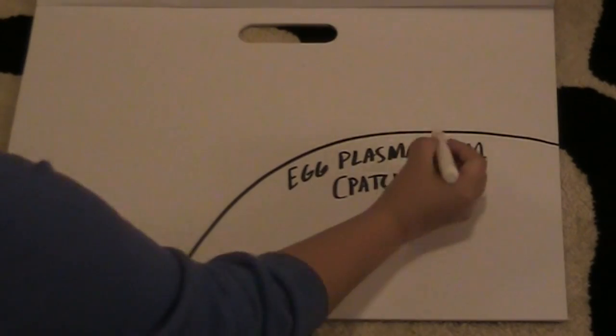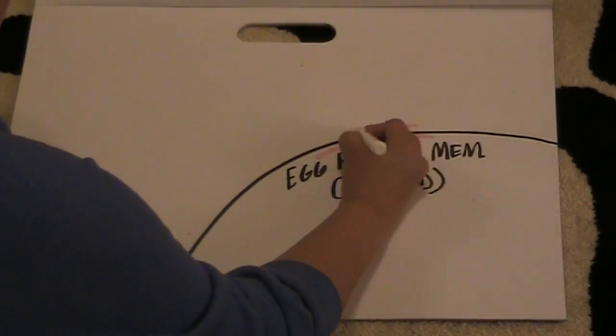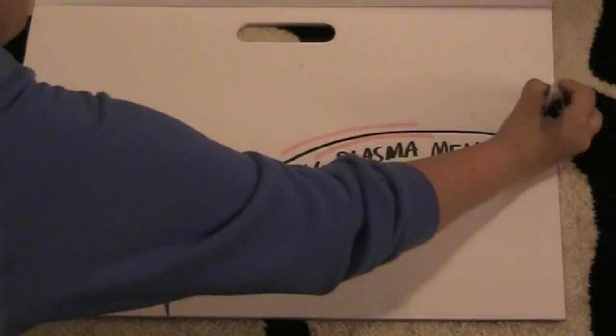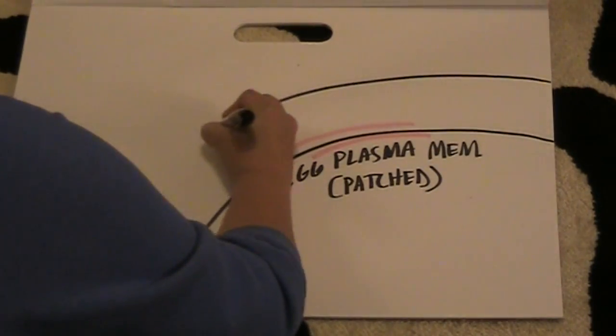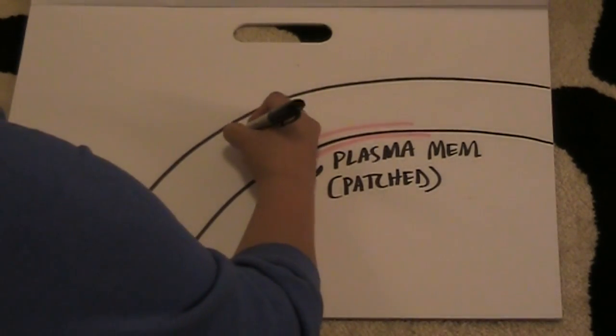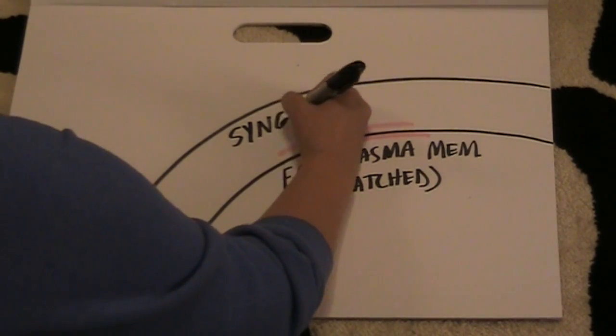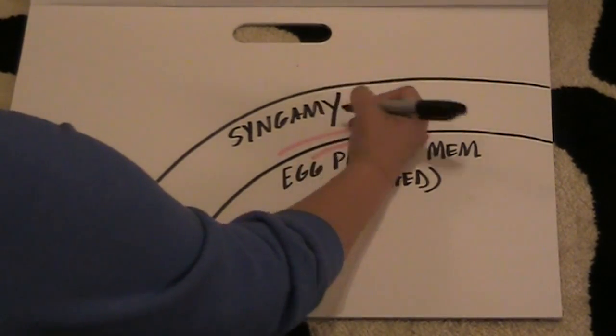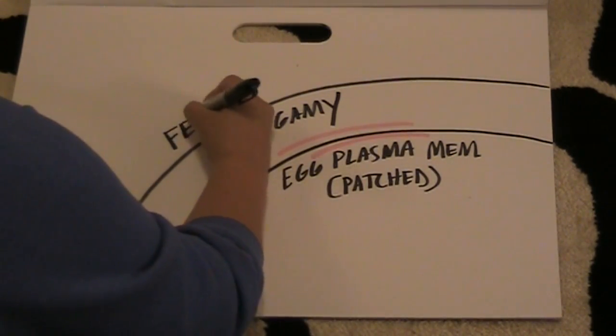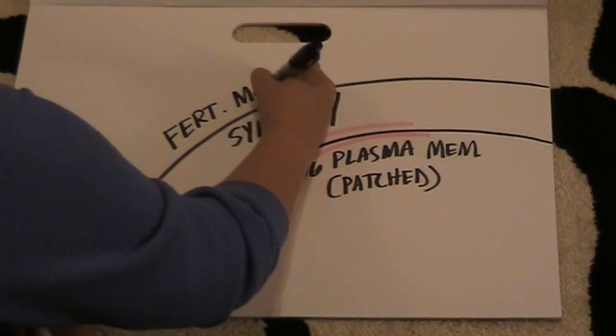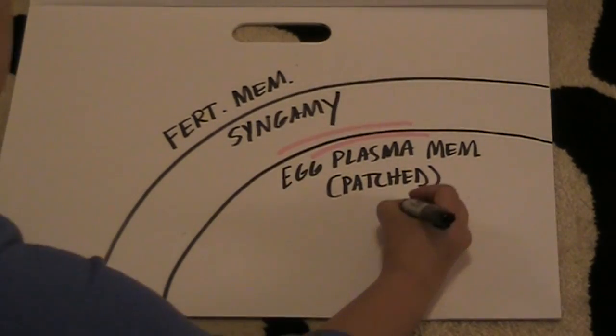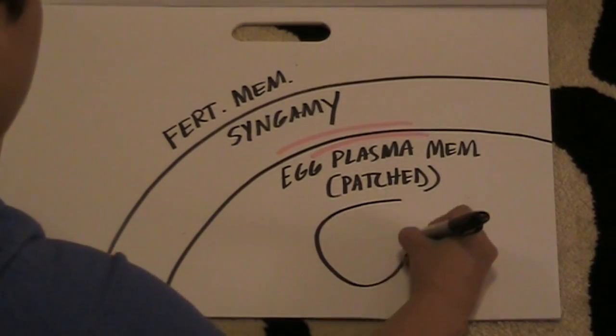So now that we have the other nuclei inside, remember, there was already one present. So what does this mean? This means syngamy. Syngamy was taught to me by my professor, one Dr. Kathy McDowell, who says that when two pronuclei are contained within one cell, you have syngamy.